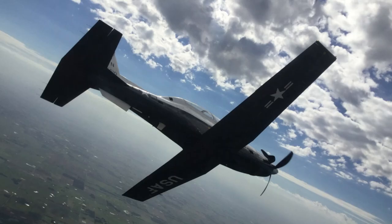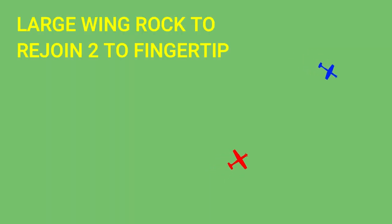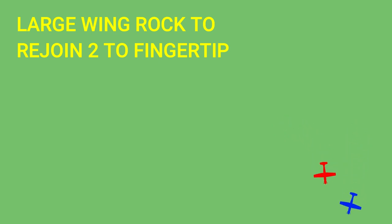In any of these scenarios, if two is visual with lead, they may roll out regardless of who initiates the breakout. If number two is belly up and therefore not visual with one, one will direct two to roll out once safe separation is established. Lead then directs two to rejoin. Here are two breakout videos — the first is directed by lead, the second is self-initiated by two. Example 1: 'Yogi two, break out.' — 'Yogi two is breaking out.' — 'Yogi two, roll out.' — 'Yogi two is visual.' Example 2: 'Yogi two is breaking out.'